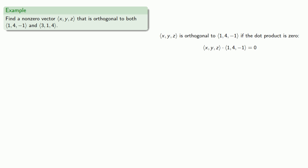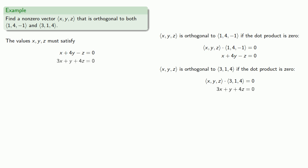Well we know how to find the dot product, and that gives us an equation. We also want (x, y, z) to be orthogonal to (3, 1, 4). And again, this is orthogonal if the dot product is zero, and that gives us a second equation. And so whatever the values x, y, and z are, they have to satisfy a system of two equations and three unknowns.